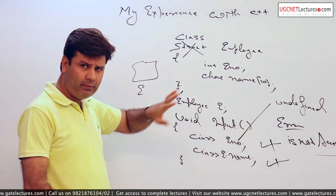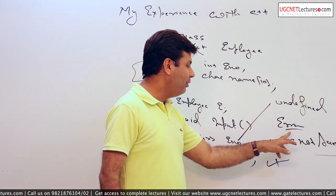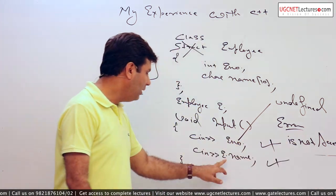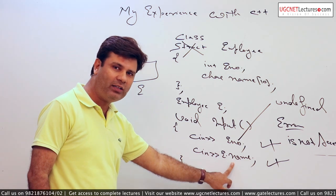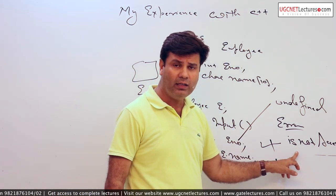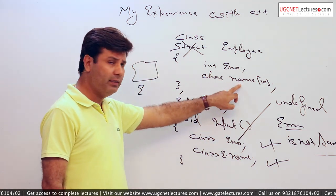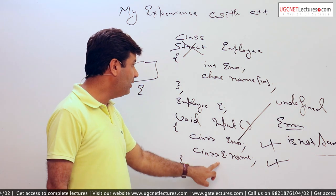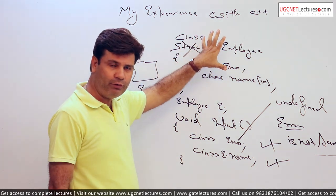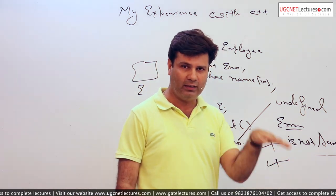For the name, if I give a reference E dot name, the compiler gives the error 'not accessible.' The compiler has found where exactly name is, but it's a part of the class which is hidden — it is private by default. So it gives the error 'not accessible,' meaning it is hidden and you cannot use it.